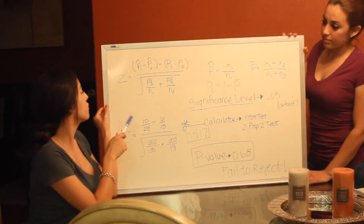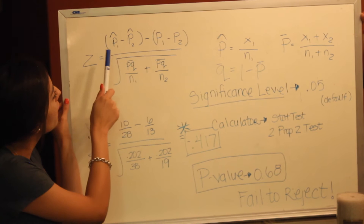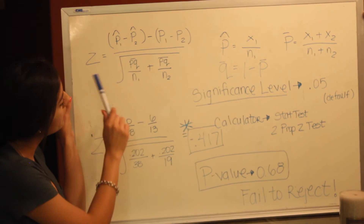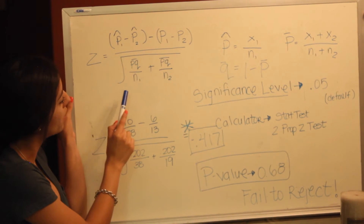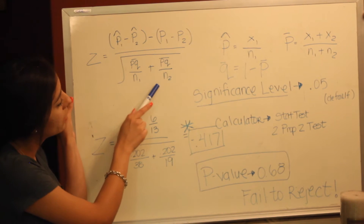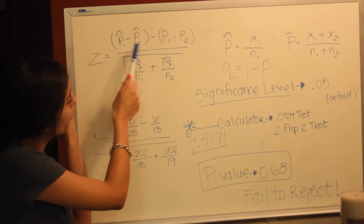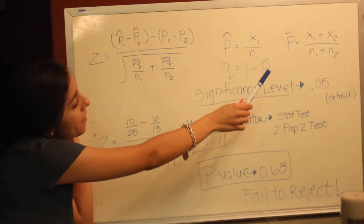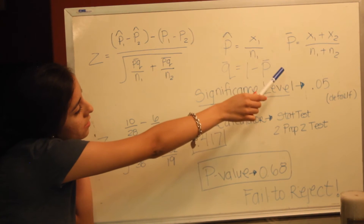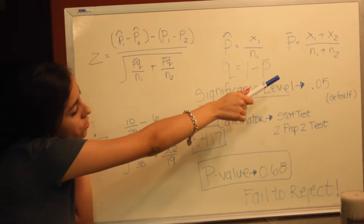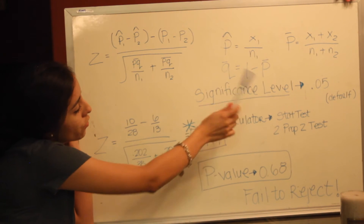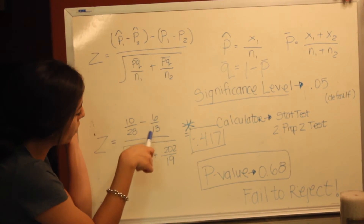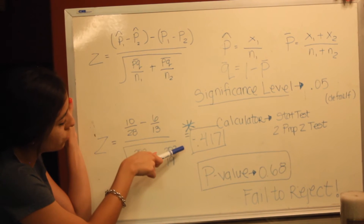In order to start our calculations, we first have to find our z. It starts with finding p-hat sub 1 minus p-hat sub 2, minus p1 minus p2, divided by the square root of p-bar over n1 plus p-bar over n2. In order to find our p-bar, you first do x1 over n1 or x2 over n2. Then to find p-bar, you do x1 plus x2 divided by n1 plus n2, and subtract that from 1 to find q-bar. You multiply those numbers, and after doing those calculations, we found that our z equals negative 0.417.